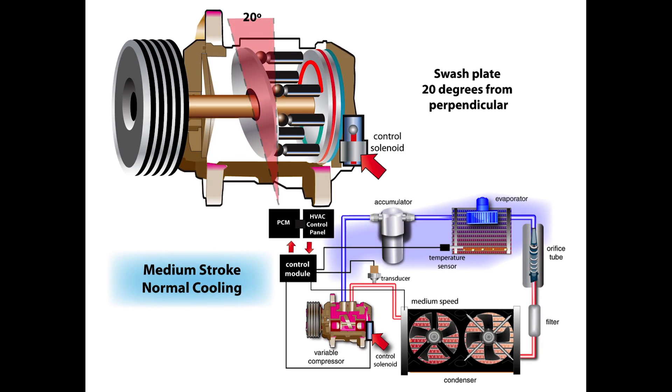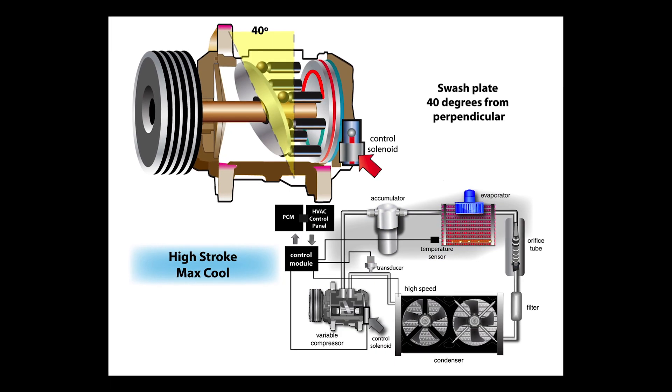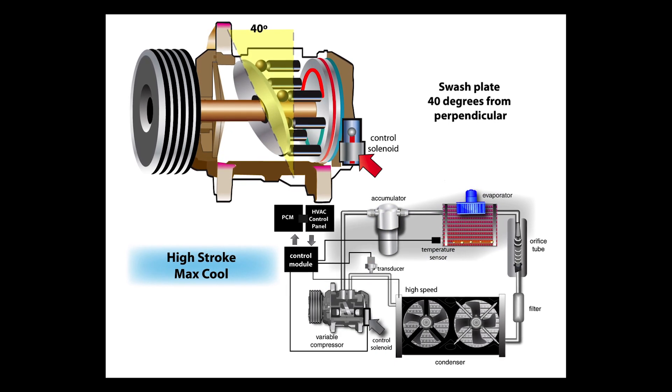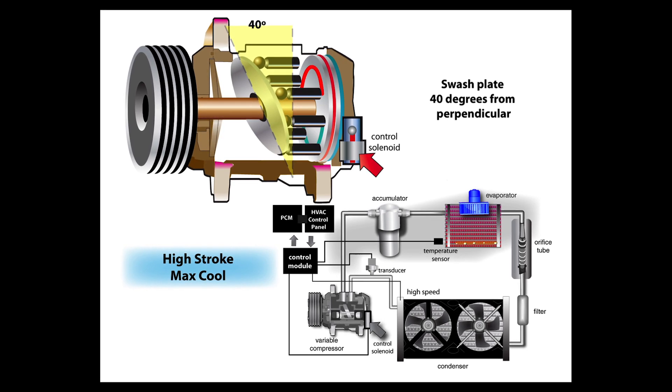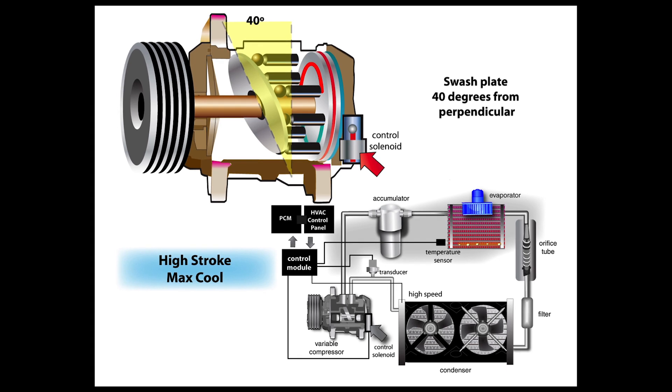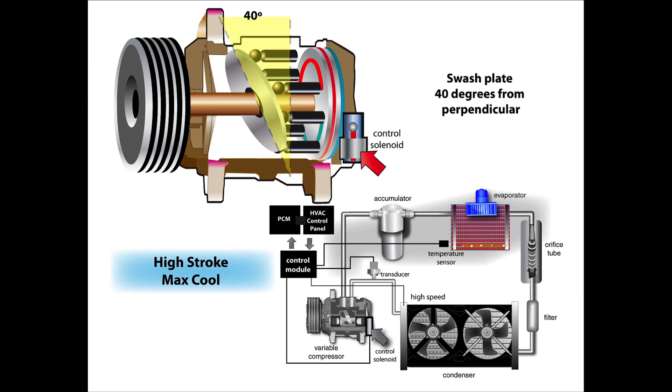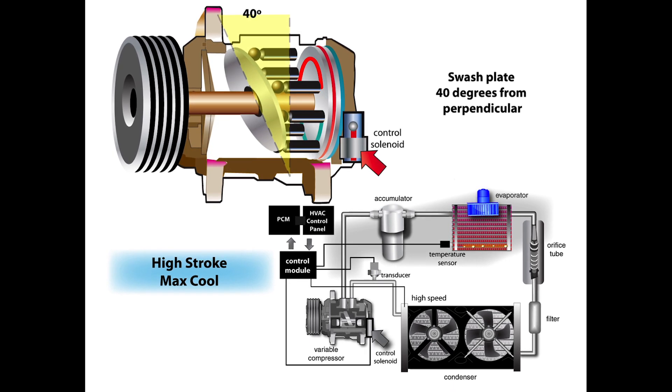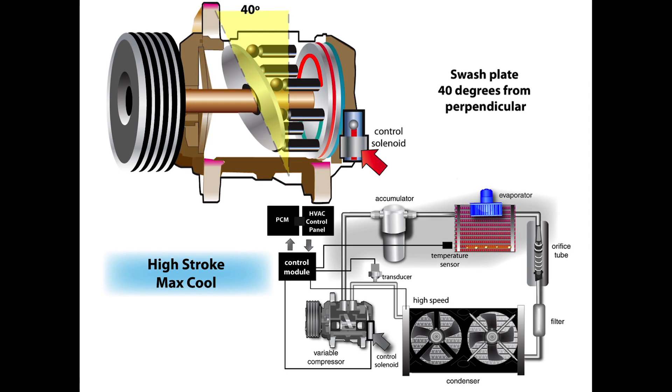And what this is going to do, when pressures need to increase or the compressor is turned on, requested to pump more refrigerant, that control solenoid is going to change a swash plate inside the compressor. Now depending on the demand from the vehicle, that swash plate is going to change the angles. So with higher demand, that plate is going to be at a higher angle and the computer is going to control the solenoid via increased duty cycle.